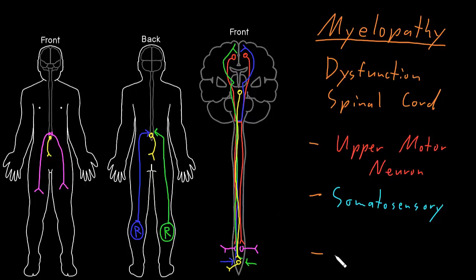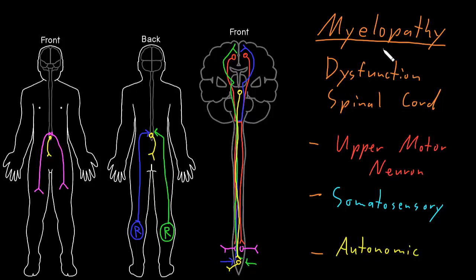With a myelopathy, you can also get autonomic abnormalities. There are lots of different things traveling up and down through the spinal cord, connecting the brain with the peripheral nervous system heading out through spinal nerves into the limbs and trunk. So what might a myelopathy syndrome look like? Let's take for example some kind of lesion — some abnormality or injury — about halfway up the spinal cord, causing dysfunction of all these neuron axons carrying information to and from the brain.